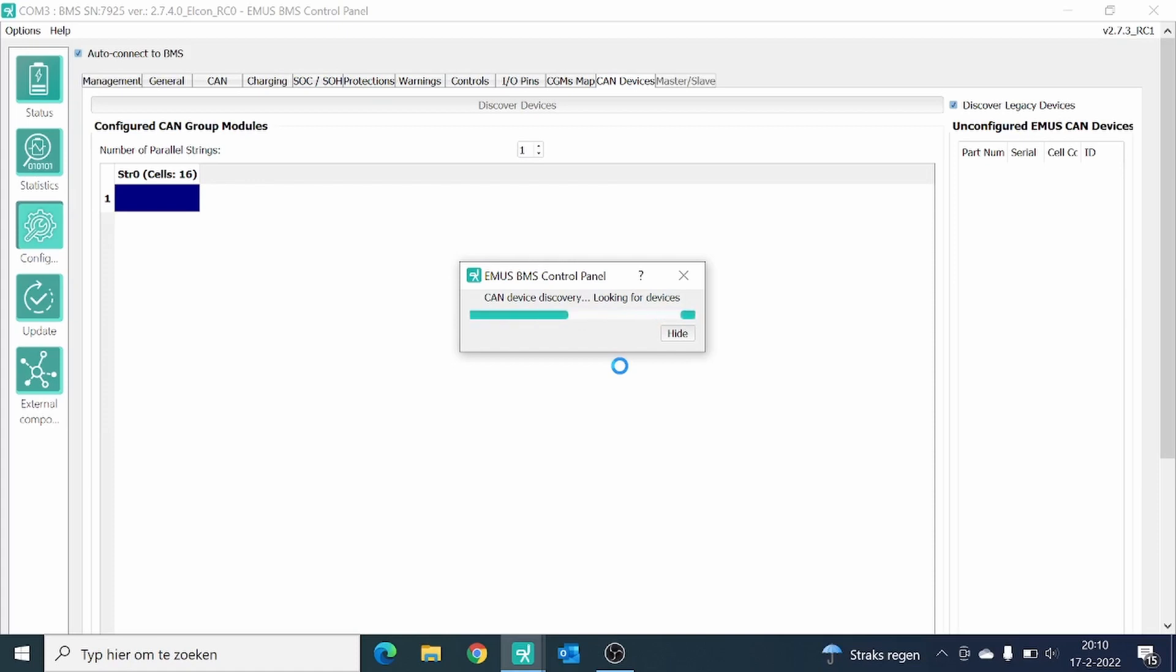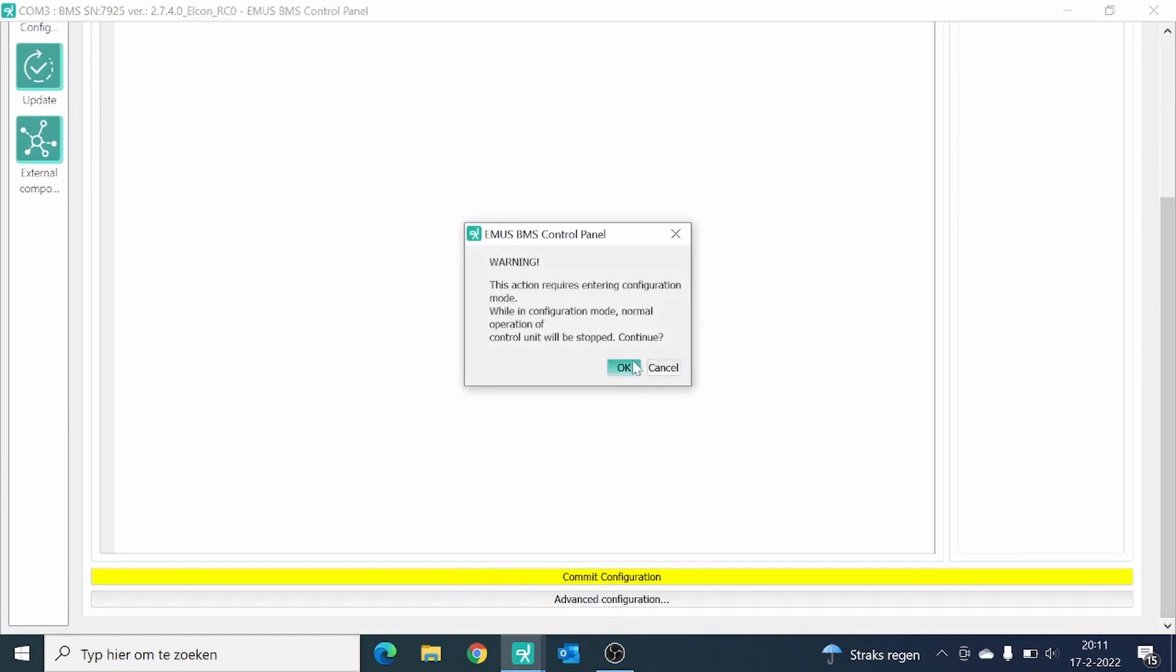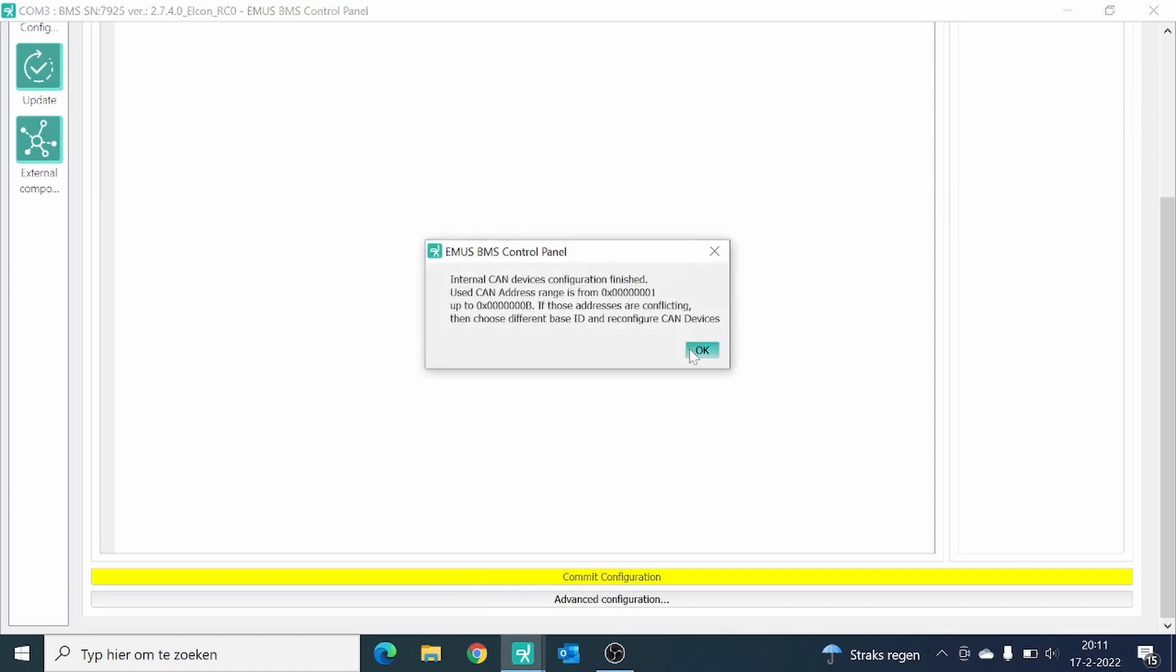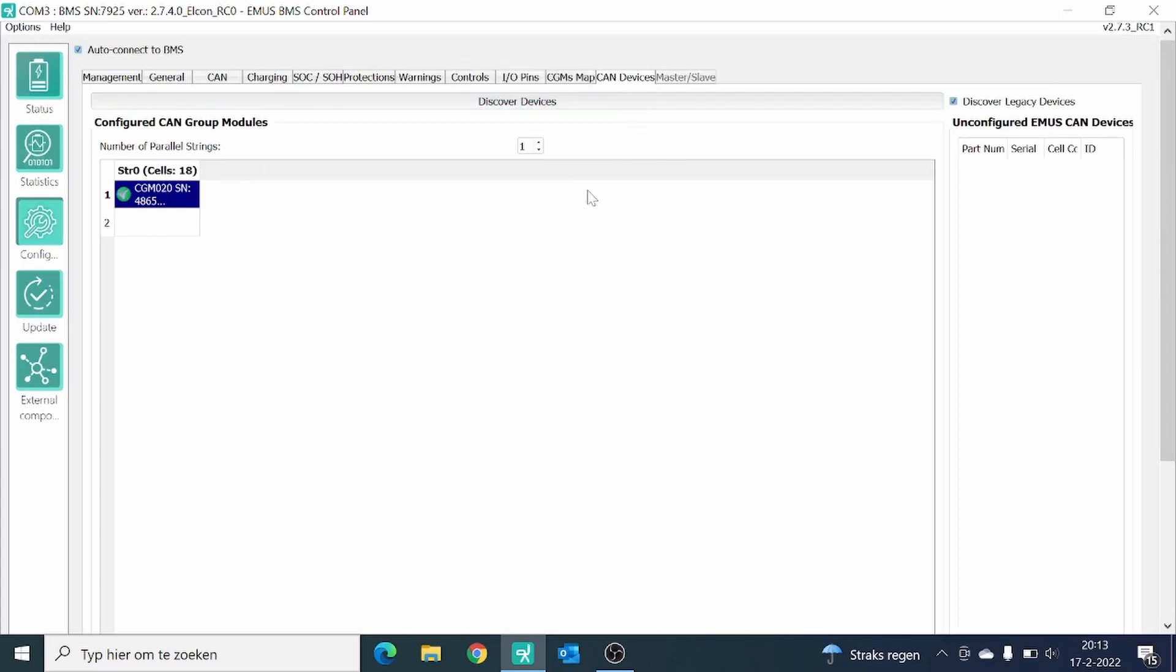In our test setup, we only used one CGM module so it should find only one. As you see, it's now shown up in the un-configured devices and then you can slide it to your string number zero. Because this is a very simple setup, you will only have one string. Now you can scroll down and push on the button Commit Configuration. Click on OK and then you can scroll up again and it should show the correct CAN device with, in this example, 18 cells shown up. So now this CAN group module is configured correctly.